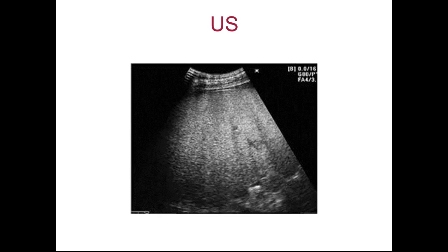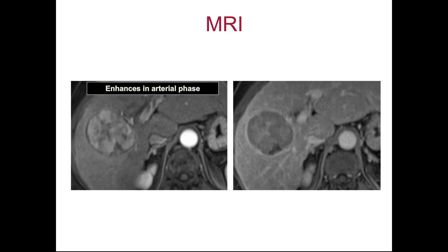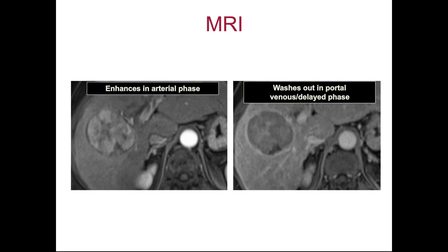This is her MR scan, and you can see that in the arterial phase she has this lesion which enhances, and in the delayed or portal venous washout phase she has washout of the lesion with a pseudo capsule. So this is LI-RADS 5 hepatocellular carcinoma — highly confident of the diagnosis of hepatocellular carcinoma in this otherwise asymptomatic patient.